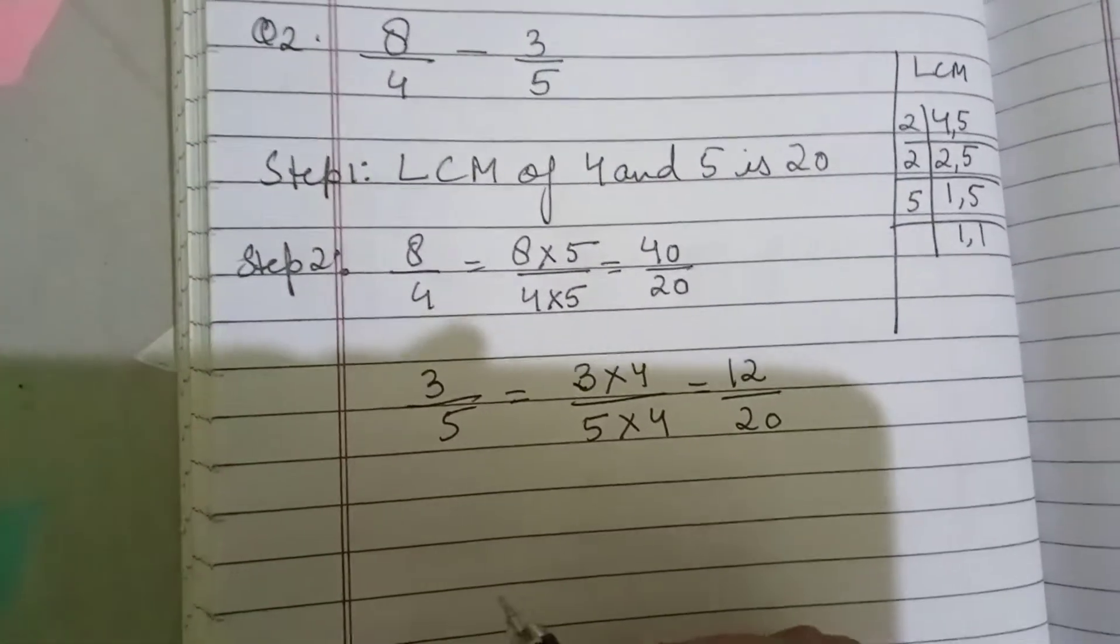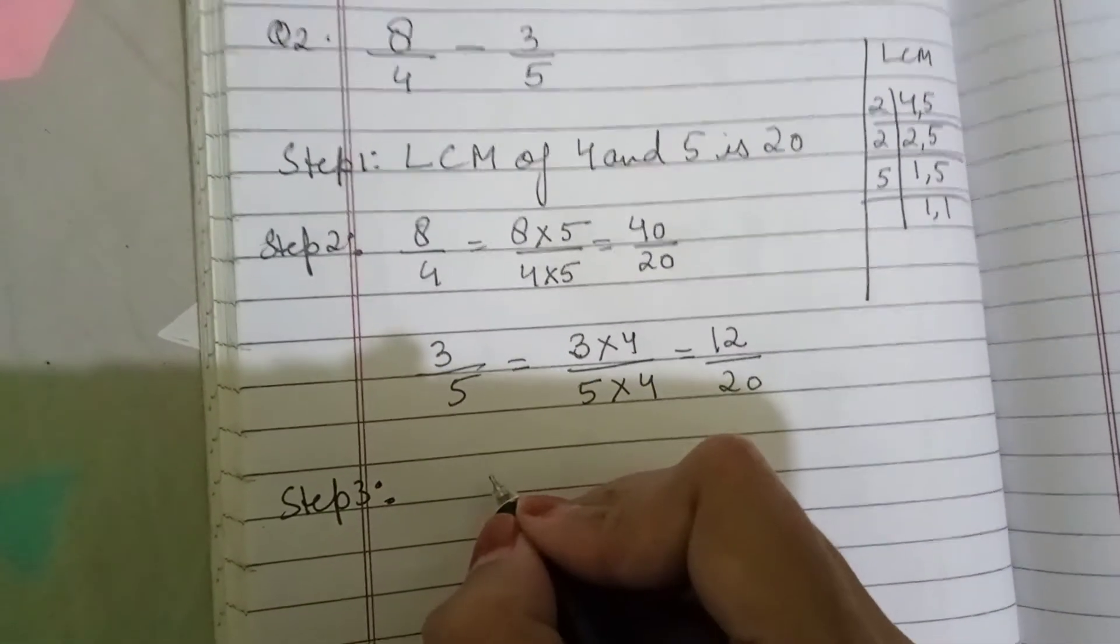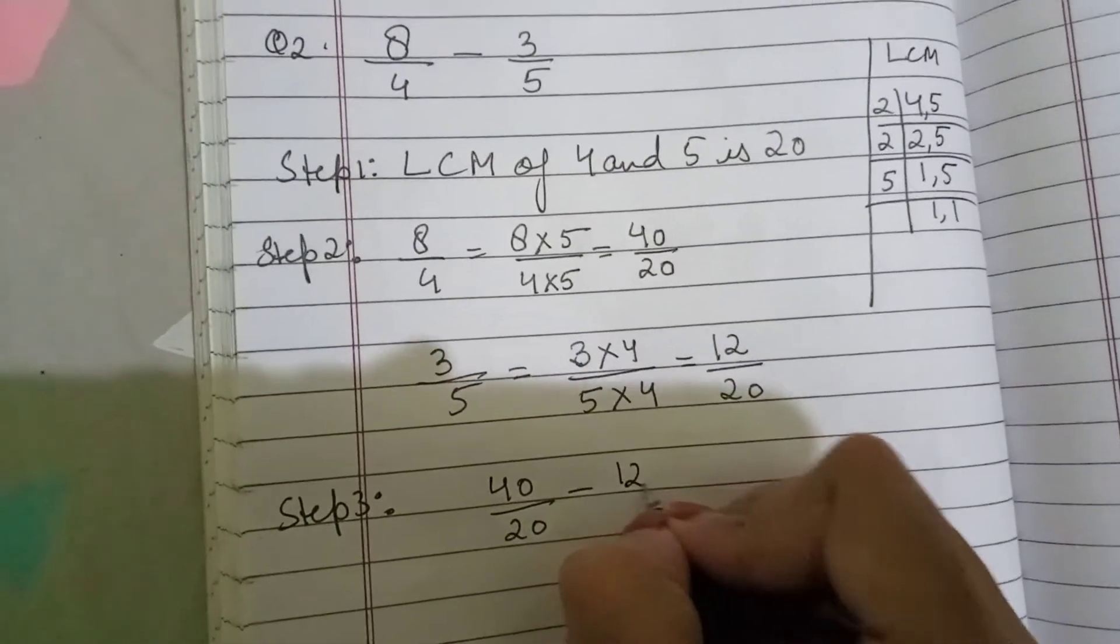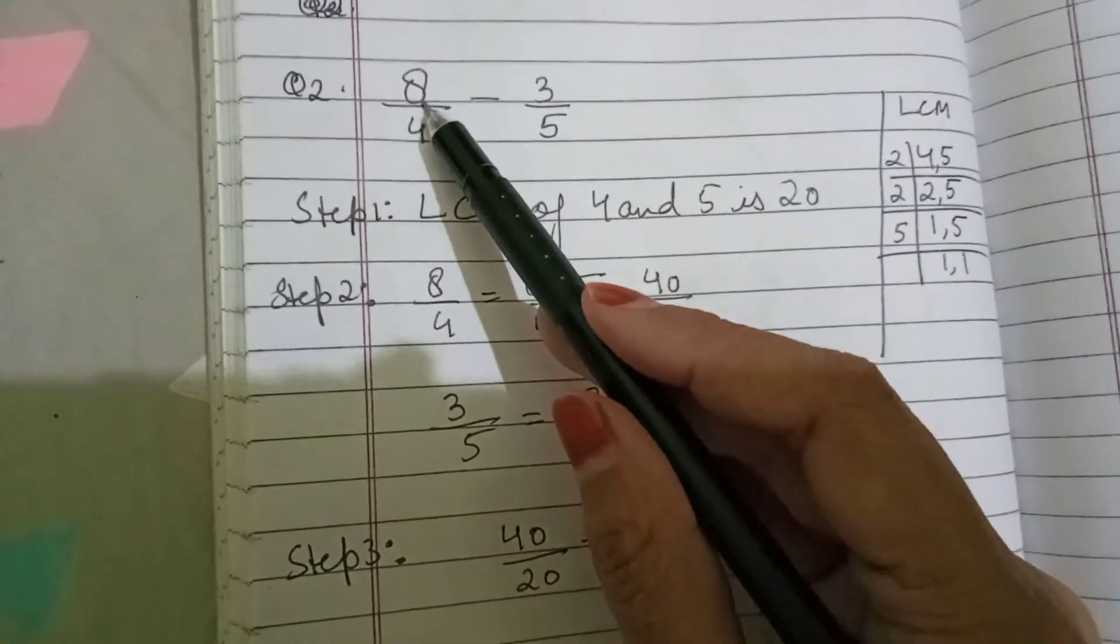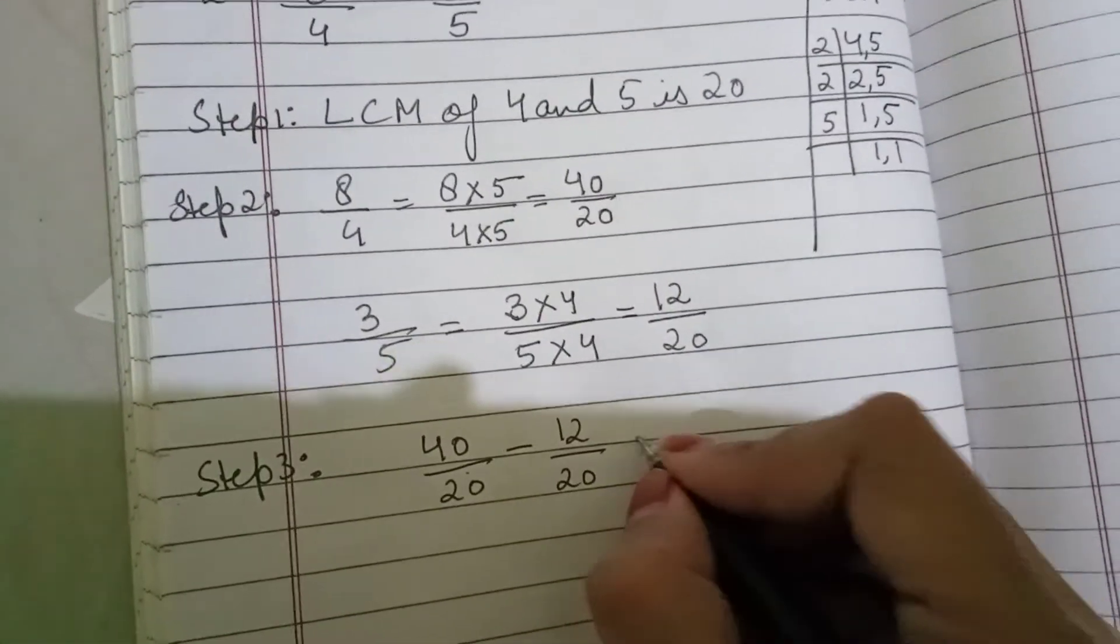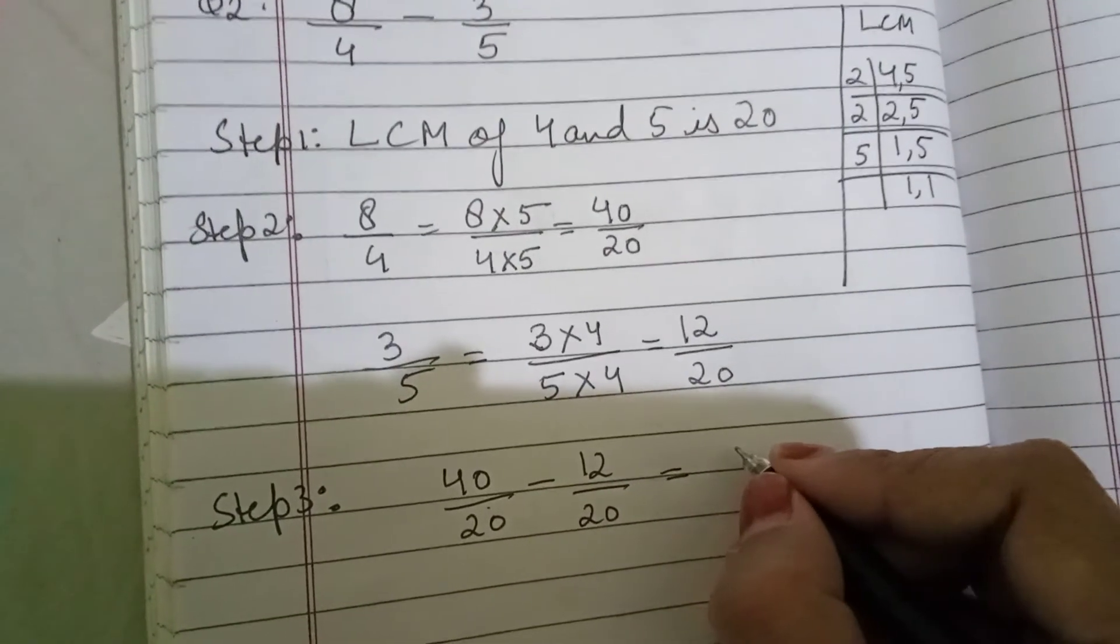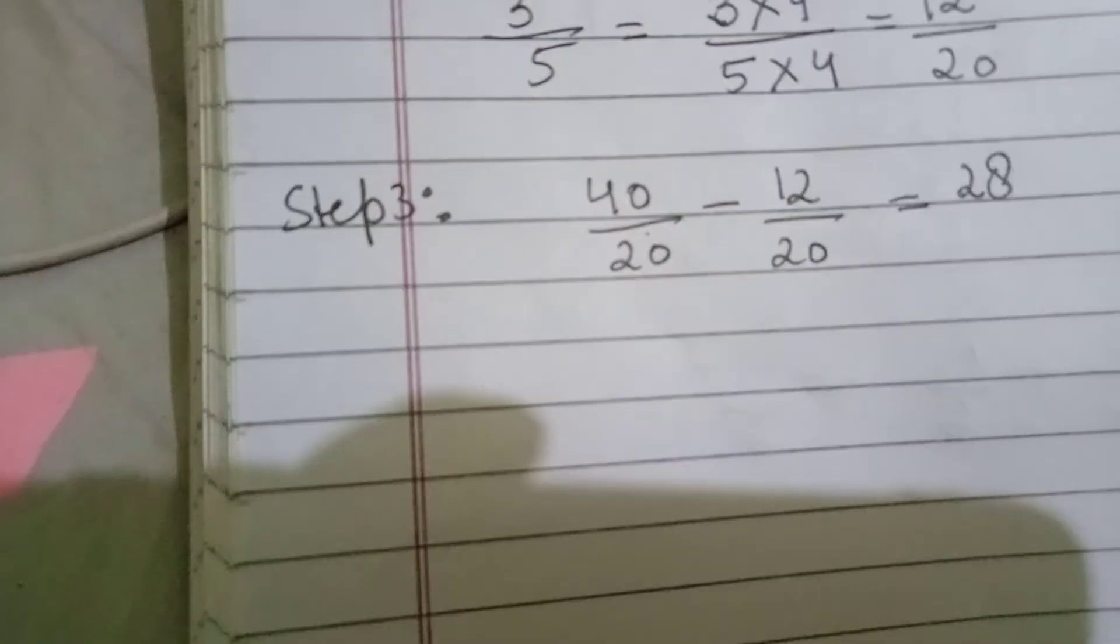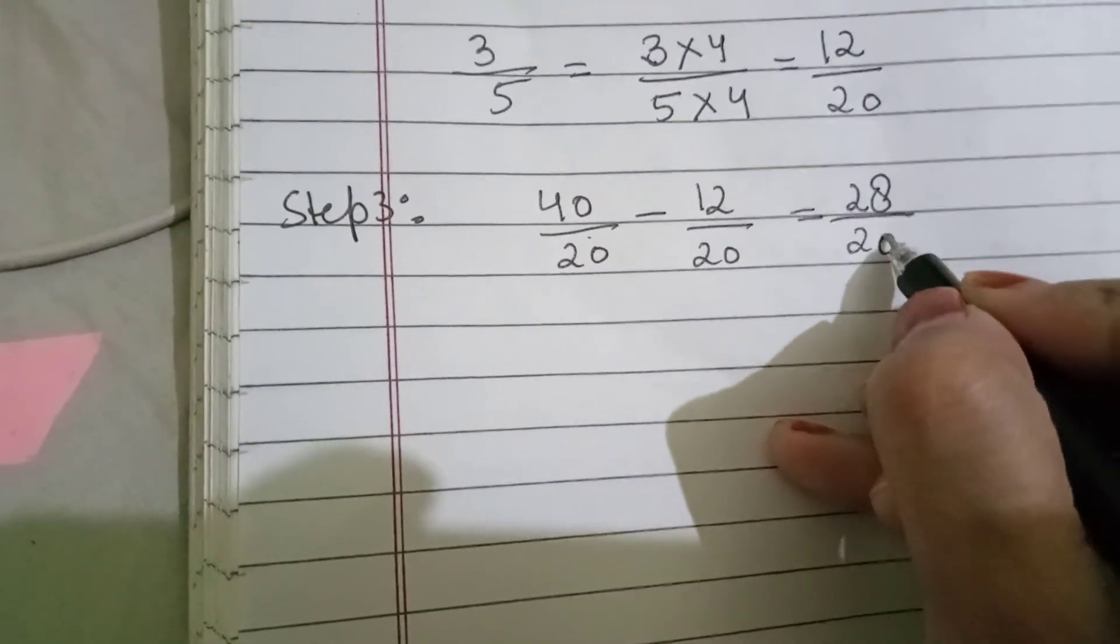Can you see the denominators are same? So, step number 3 is 40 upon 20 minus 12 upon 20. First one will come first. So, 40 minus 12 is 28 upon 20.